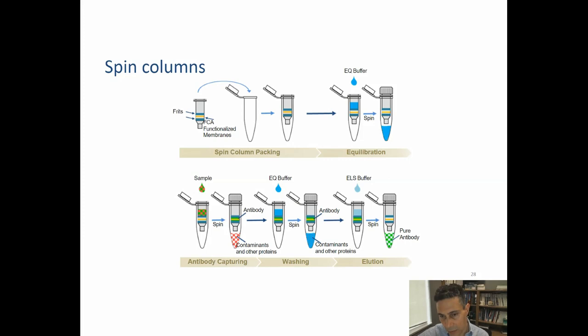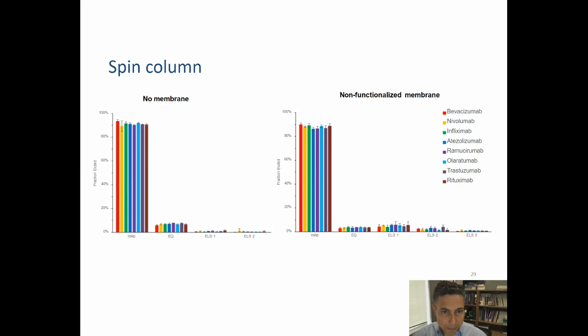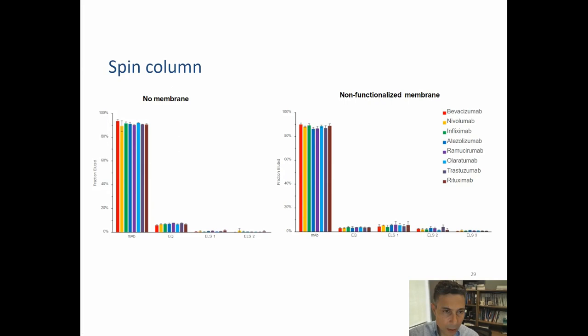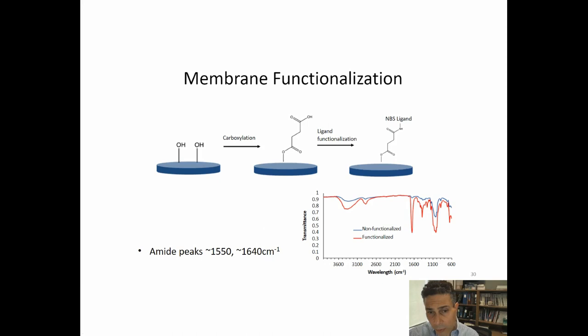Using elution buffer, the antibodies are released from the membranes into the bottom of the tube. Control experiments show that with no membranes, or with unfunctionalized membranes, none of the eight antibodies tested are captured. Whatever small amounts appear in the wash or elution steps are just residual material in the frits and pores — none were effectively captured without functionalization.